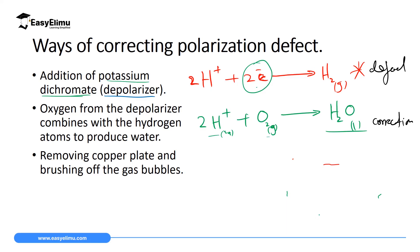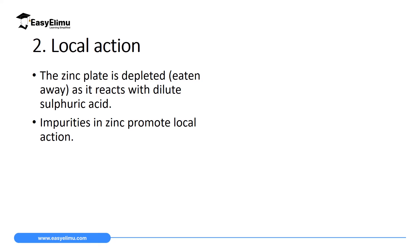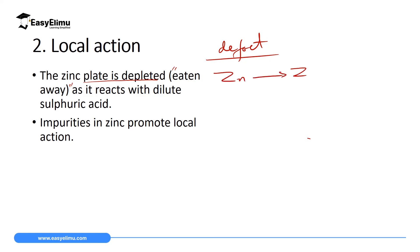Another way to solve polarization is to remove the copper plate from the solution and brush off the gas bubbles, though this temporarily stops the process. The second defect is local action, which occurs when the zinc plate acting as the cathode is depleted or corroded as it reacts with the sulfuric acid. The equation shows zinc reacting with the acid to produce zinc ions and losing electrons, so it is depleted in the process.